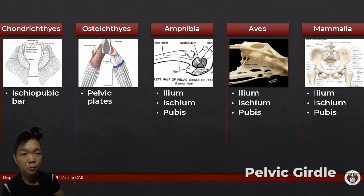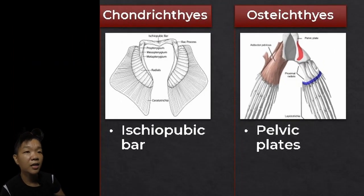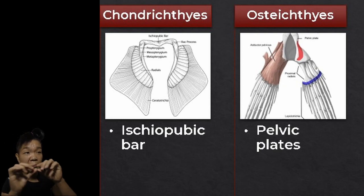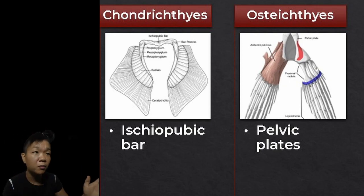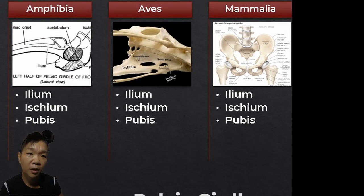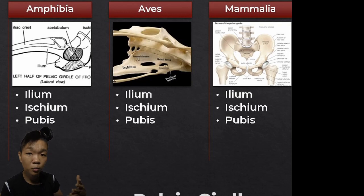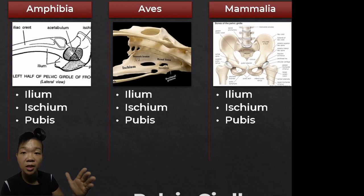Moving on, the pelvic girdle braces the posterior paired appendages to the axial skeleton. Similar to the pectoral girdle, it originated from the pterygiophore elements of the fins. In fishes, the pelvic girdle isn't as pronounced as the pectoral girdle — it just looks like a bar or some plates; very minimal, since pelvic fins are not the main players in swimming. For tetrapods, the hip girdle is composed of three bones, all of which are endochondral in origin. The ilium of the hip girdle articulates through the sacral vertebrae. The ischia and/or pubes meet ventrally. At times, all three bones would fuse completely to form the innominate bone.